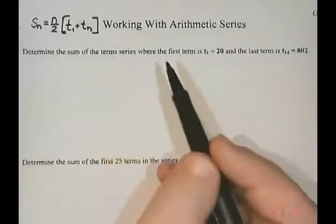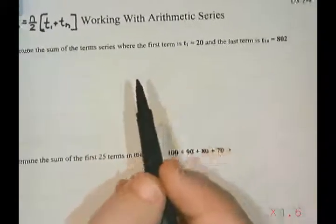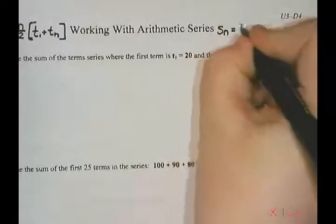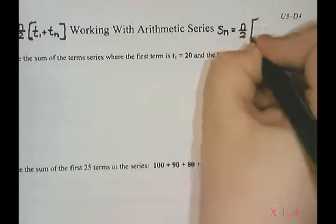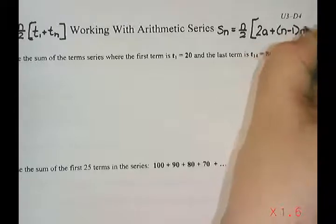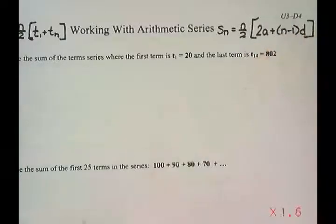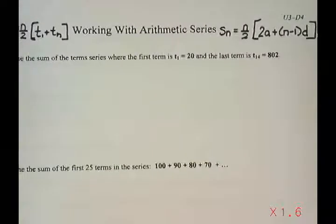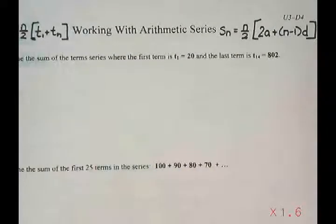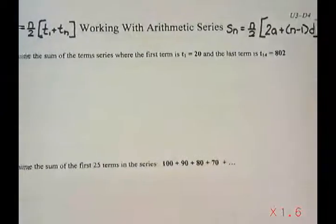The other formula that we can use is S_n equals n divided by two times 2a plus (n minus one) times d. That's just the formula written using the same letters as the ones we use for an arithmetic sequence. So with the questions we're about to do, we're going to talk about how do you know when to use each formula and why I'd want to use one or the other.